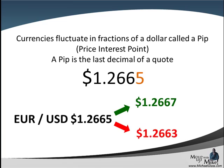The euro dollar is currently at 1.2665. If we were to go up two pips, that would take us to 1.2667. If we were to go down two pips, that would take us to 1.2663. You can see that the last decimal point is where we gain and lose value.